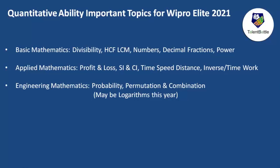The quantitative ability section measures numerical ability and mathematical calculations. Questions are divided into three parts: basic mathematics, applied mathematics, and engineering mathematics. Basic mathematics tests your understanding of number systems — fractions, decimals, positive/negative numbers, rational numbers, factors, and divisibility. Main topics include divisibility rules, HCF, LCM, numbers, decimal fractions, powers, and the remainder theorem.